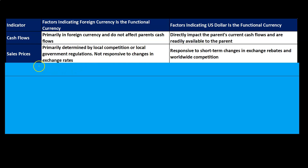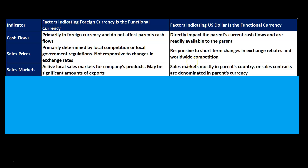For the sales prices indicator: factors indicating foreign currency is the functional currency include sales prices primarily determined by local competition or local government regulations, not responsive to changes in exchange rates. If sales prices are dependent on local competition, as you would expect from a company operating primarily and independently in a foreign country, that points to the foreign currency. Factors indicating U.S. dollar is the functional currency include sales prices responsive to short-term changes in exchange rates and worldwide competition, as opposed to local competition.